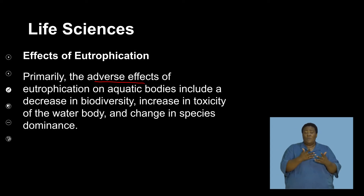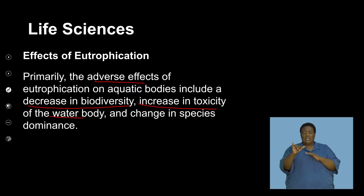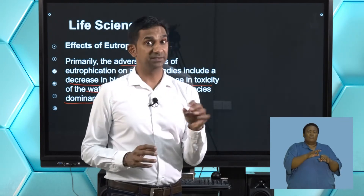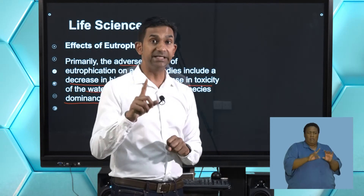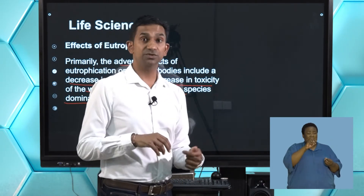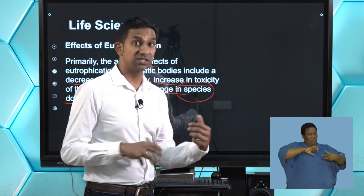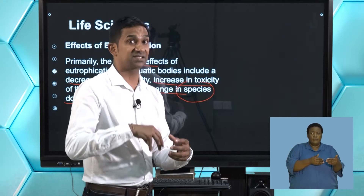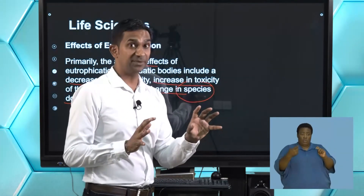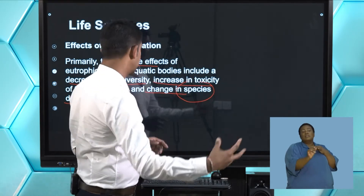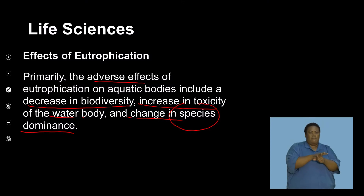The adverse effects of eutrophication on aquatic bodies include the decrease of biodiversity, the increase in toxicity of the water body, and the change in species dominance. The accumulation of algae and biotoxins reduces the diversity of living organisms. Certain species adapted to these conditions will survive, and a dominant species not naturally suited to that area starts to take over — generally not ideal as it replaces the species prevalent before the impact of eutrophication.